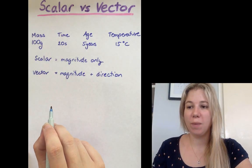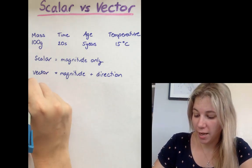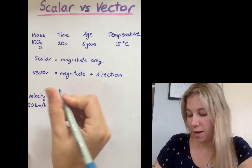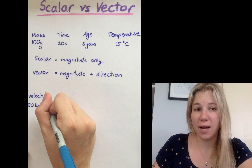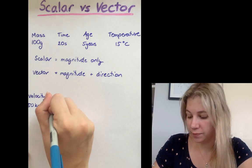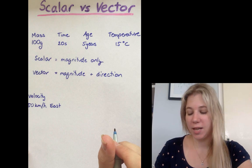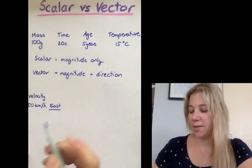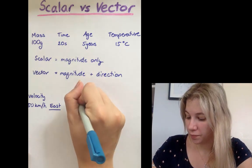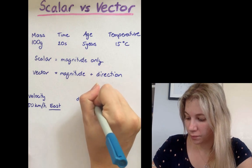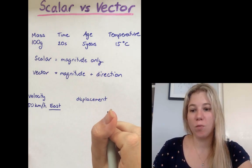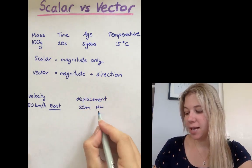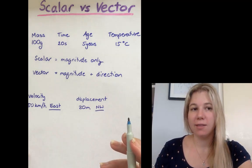Examples of vector quantities would be velocity. So if we had a velocity of 50 kilometers per hour, and let's say we're talking about a car and the car was traveling east, that is a vector quantity because it has this direction. Another example would be a displacement. If someone walked 20 meters northwest, because it has this direction, this is a vector quantity.